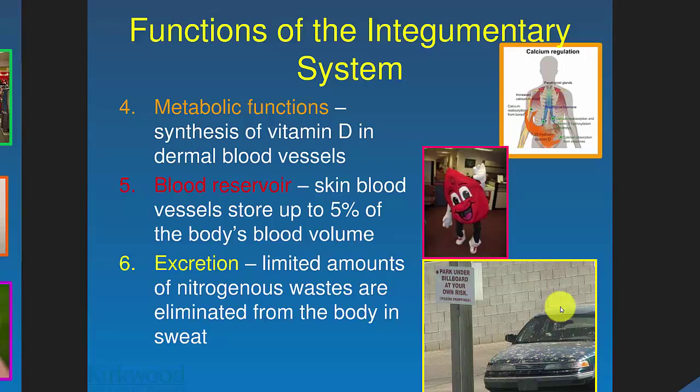Blood reservoir: if you're not active and your muscles aren't really using a lot of blood, or the autonomic nervous system is not demanding blood to respond to a threat, you store that extra blood — about 5% of it — in your skin when it's not being used. Excretion: you might also get rid of nitrogenous waste or other waste products through sweat.